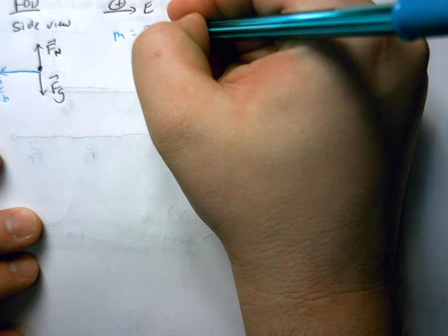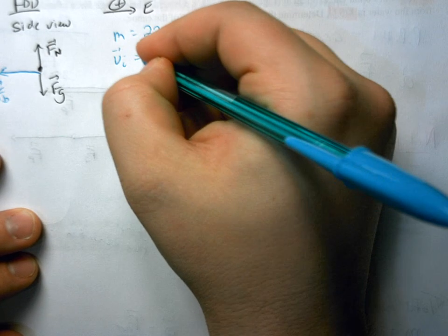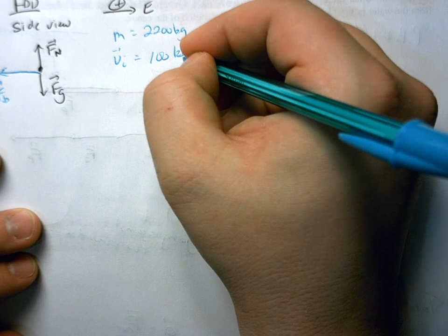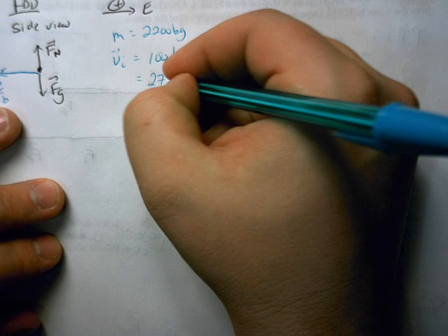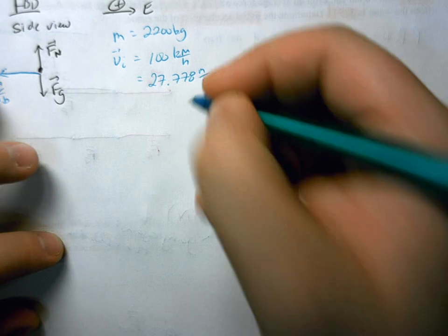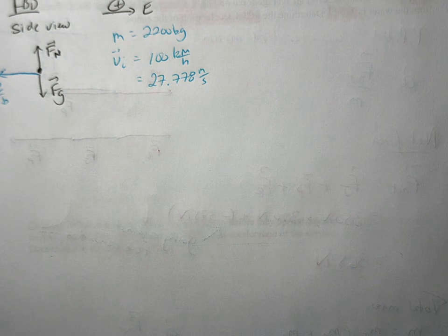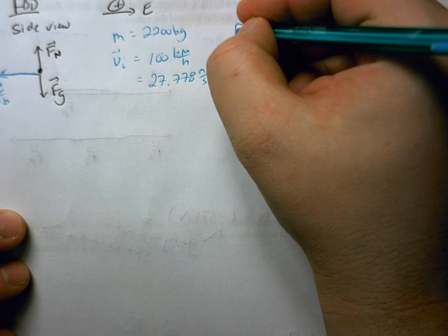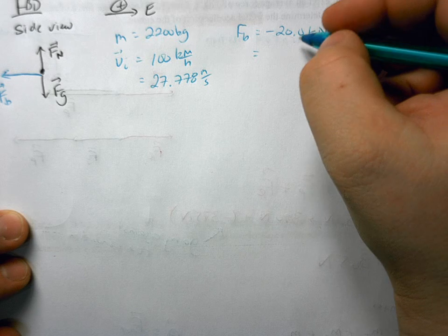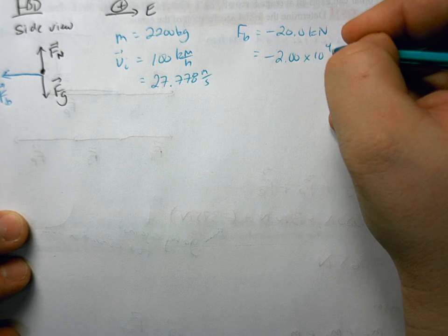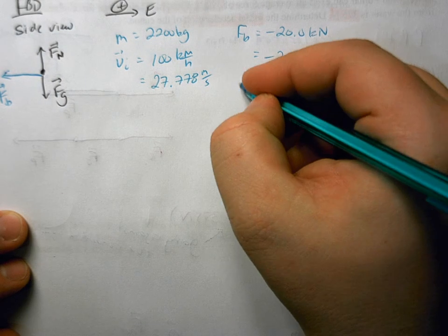Now let's identify our known variables. The mass of the car is 2200 kilograms. The initial velocity is 100 kilometers per hour east — positive since east is positive. We need to convert to meters per second, so dividing by 3.6 gives about 27.778 m/s. The braking force is negative 20 kilonewtons — negative because it points west — which we write as negative 2.00 × 10⁴ newtons. We want to find the stopping distance.